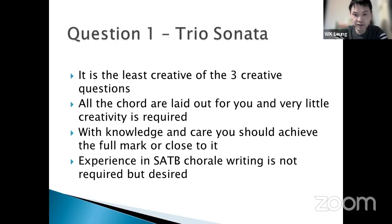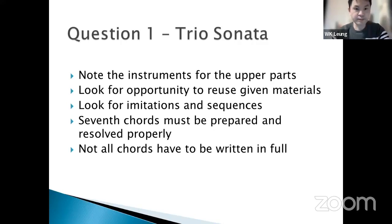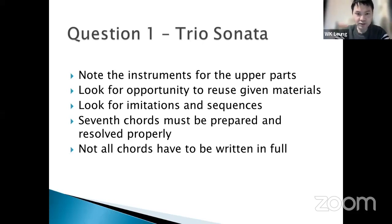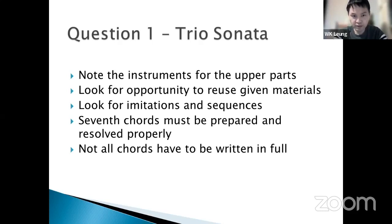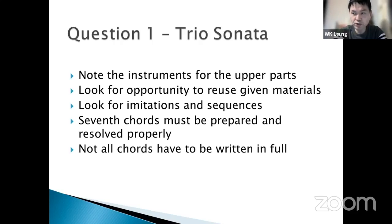Experience in four-part choral writing is not required but it is really helpful so that you can do the trio sonata with more ease. To tackle the question, first look at the treble instruments — what instruments are those? Different instruments have different ranges and it is definitely not good to write outside the range. The usual choices for treble instruments are violin, oboe, flute, or recorder. Bear in mind that for the Baroque period the oboe and flute were a little different, so the ranges were not as wide as today.